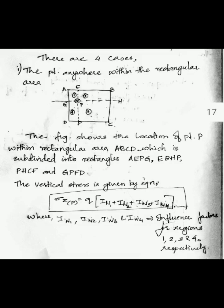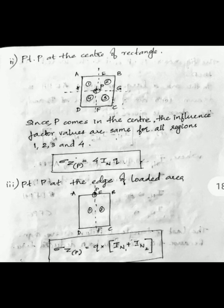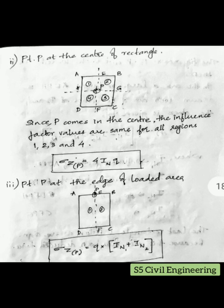Case two: point P is at the center of the rectangle. In this case we can again divide into four compartments with P as the common point, but here the influence factor values will all be the same because P lies at the center. Therefore the equation simplifies to: sigma at P equals 4 times I_N times Q.